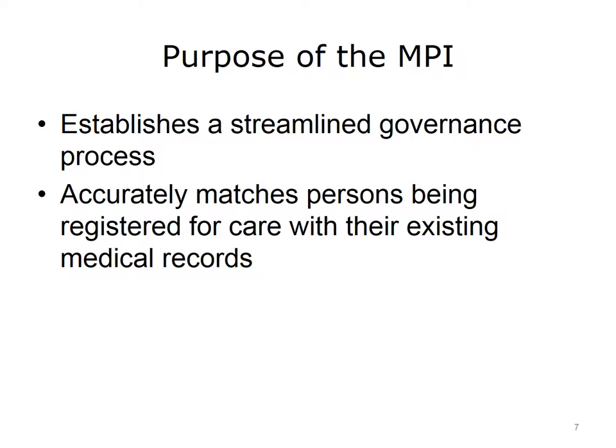AHIMA 2010 notes that one of a healthcare organization's most important resources is the MPI, as it provides the link to access patient health information across all care settings. The AHIMA 2010 practice brief lists the following reasons: it provides the index, location of, and access to a patient's EHR in an enterprise; facilitates interoperability and the accurate creation of a longitudinal record for a patient by linking records across multiple clinical systems, facilities, and provider EHRs; and ensures accurate and complete linking of EHRs for health information exchange across participating organizations, including healthcare organizations, reference labs, registries, pharmacies, and public health databases.